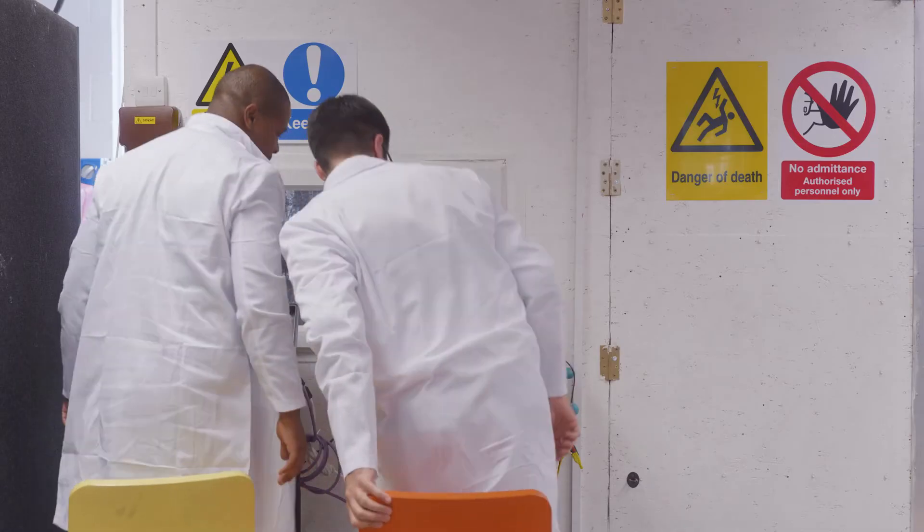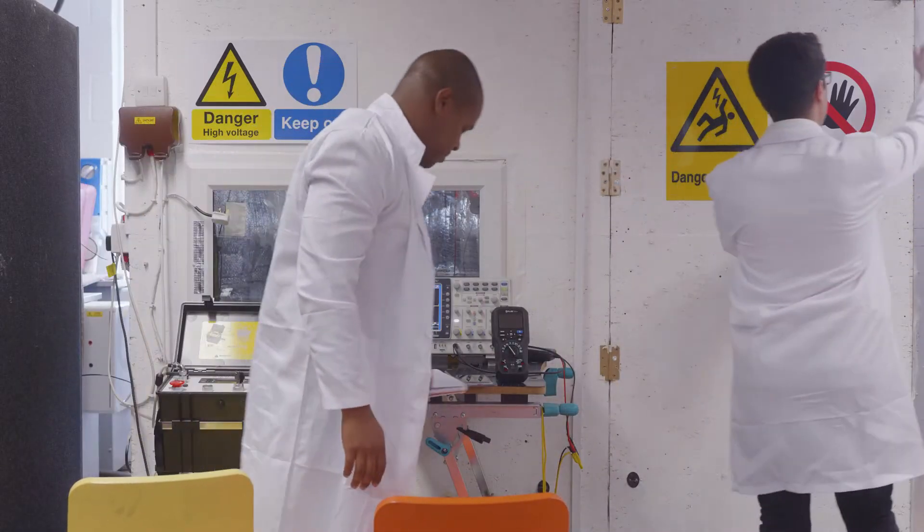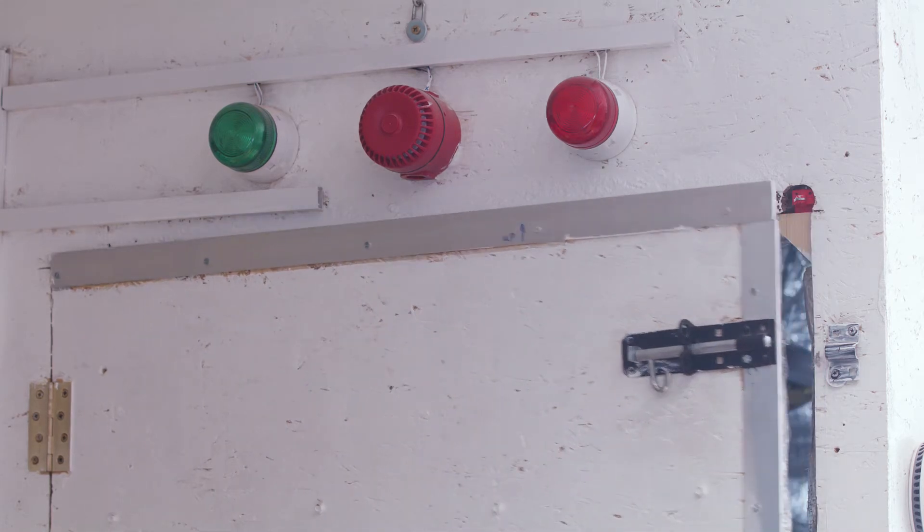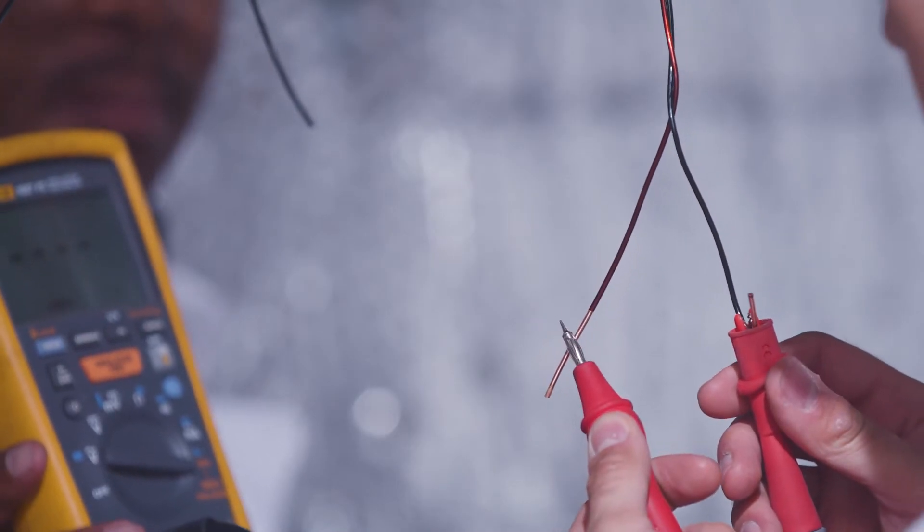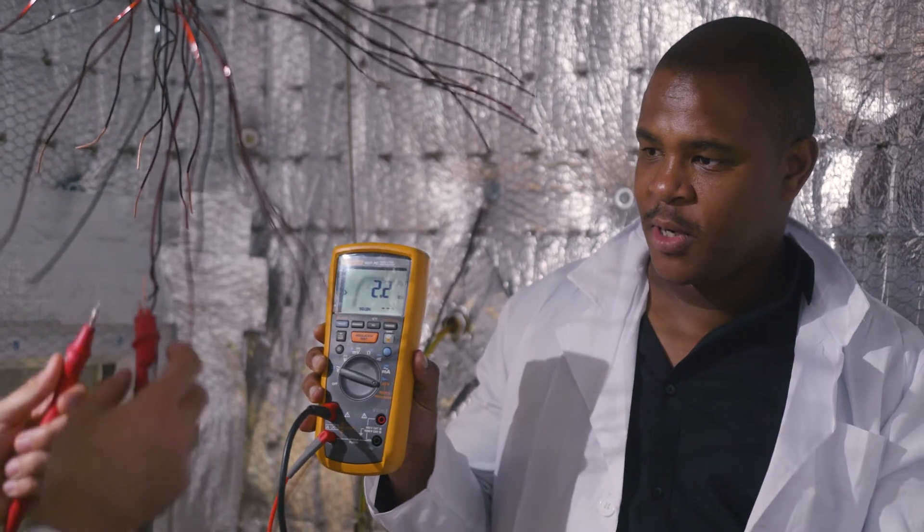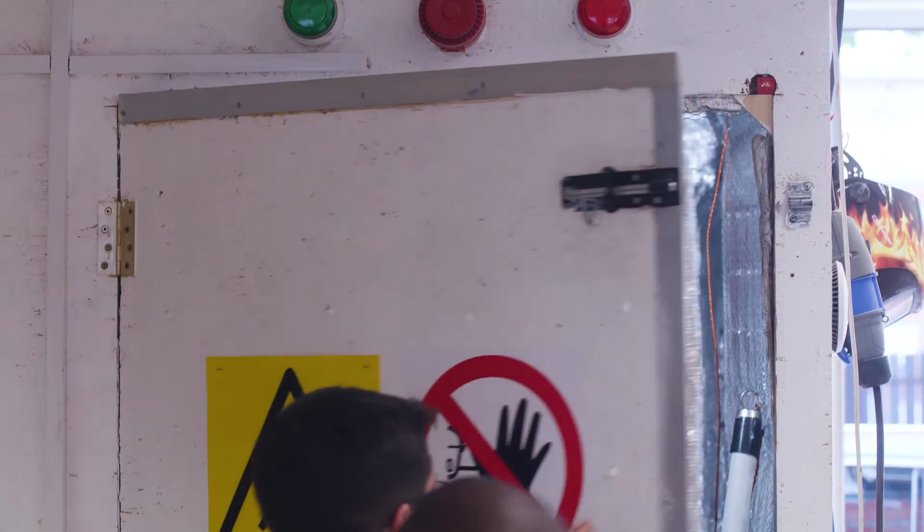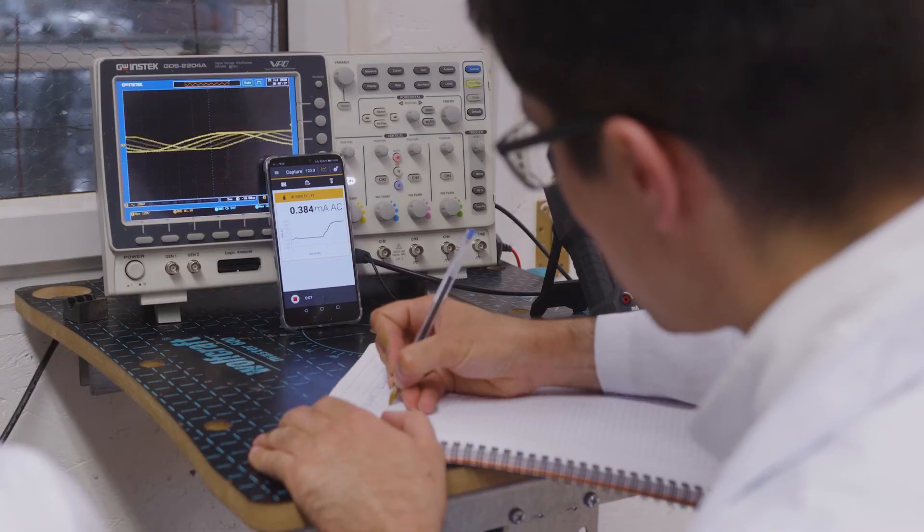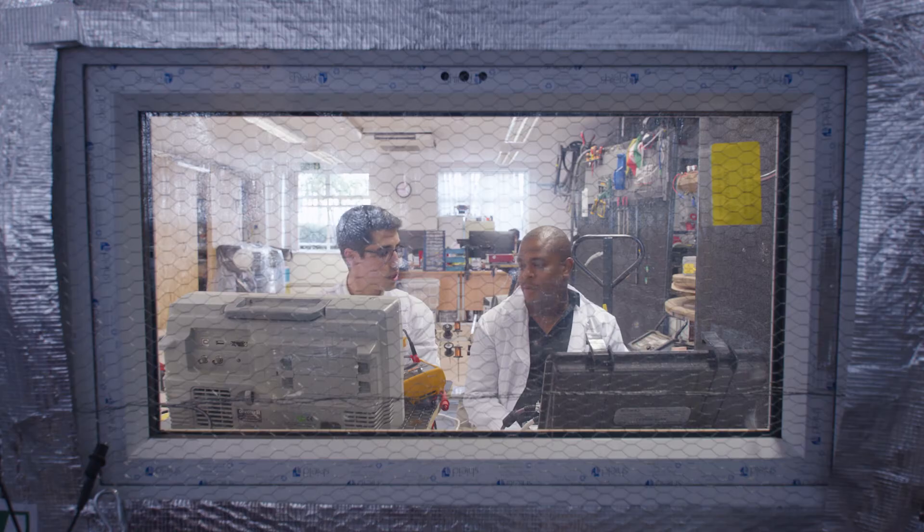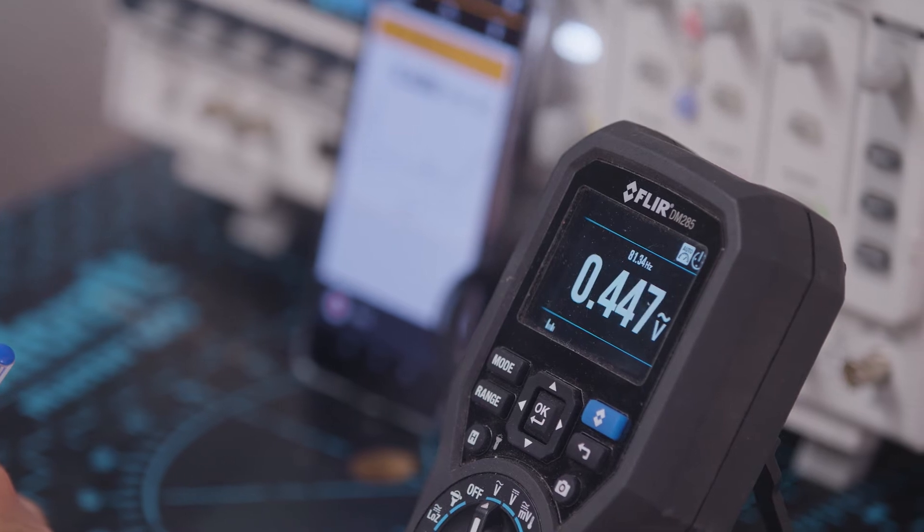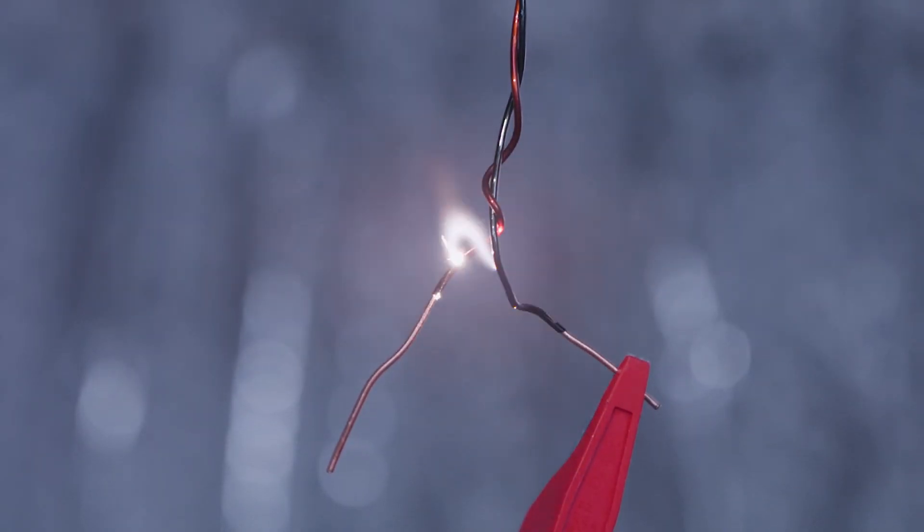There are two things that impede the flow of energy through a cable. One of them is resistance, which we can't do anything about. The other one is reactance. By balancing carefully the reactance with the capacitance which is in the cable, we remove one of the two impedances. We have reduced losses, and we have increased capacity. We can deliver more power through a given volume of copper or aluminum than you can with a conventional cable.